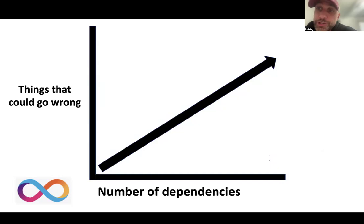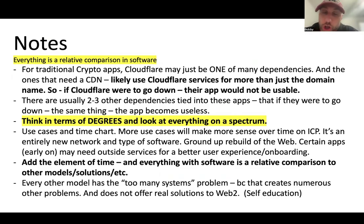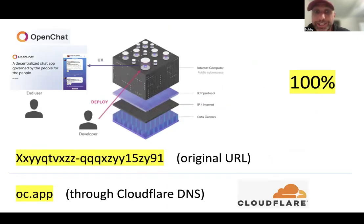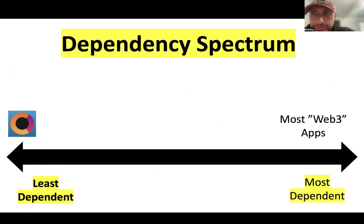For instance, today more things are possible on ICP than two-plus years ago. The network just needs time to grow — more tooling, more development, more bandwidth, more infrastructure. More use cases will make sense over time on ICP. It's an entirely new network, a new type of software — a ground-up rebuild of the entire web. We're four years into a 20-plus year roadmap and we still haven't even had a bull market. So early on, certain apps may need to look at outside services for a better user experience for onboarding. But even if Cloudflare goes down, you can still access OpenChat, highlighting the resiliency of ICP-based applications.